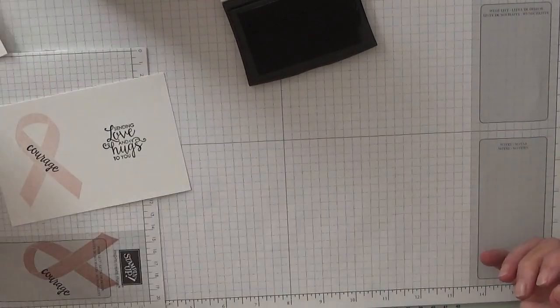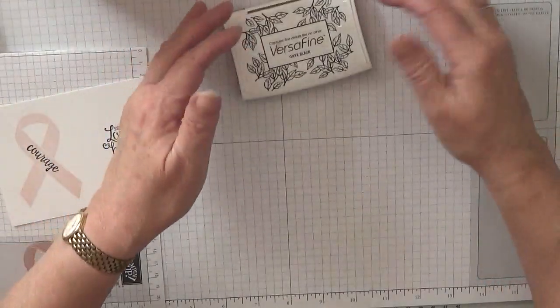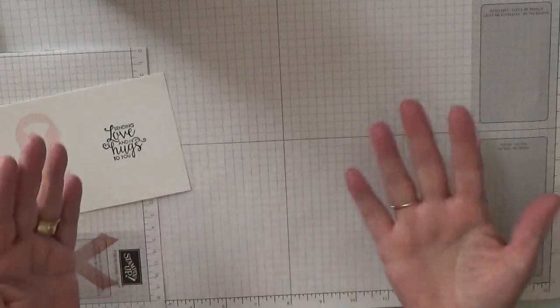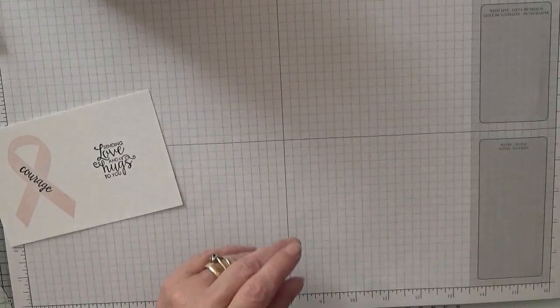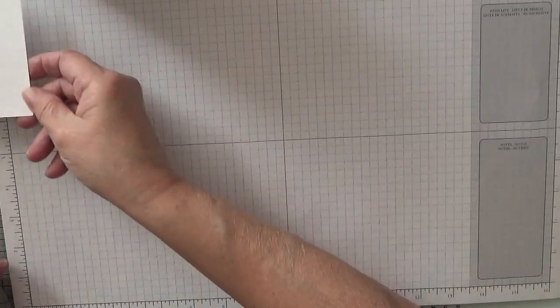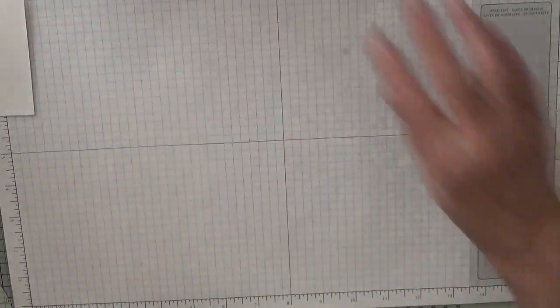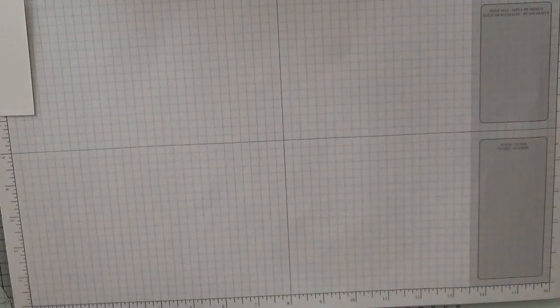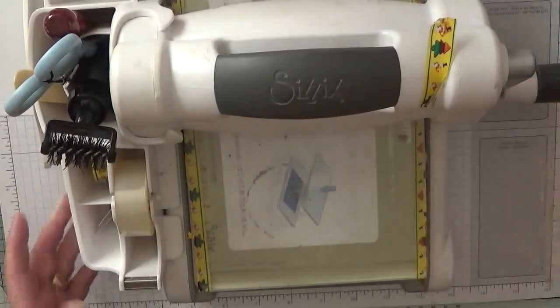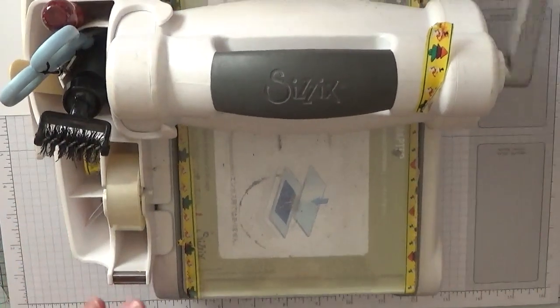Put that to one side because we don't need that yet. Close up the ink. Oh, I thought I got ink over me, but I haven't. Get rid of that, I can use that again. Put that to one side and bring up the Big Shot.